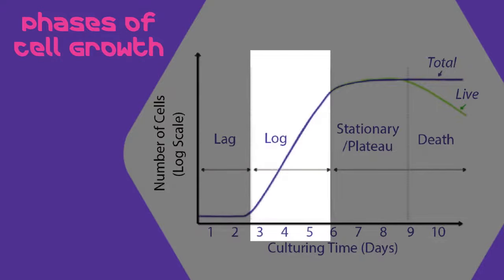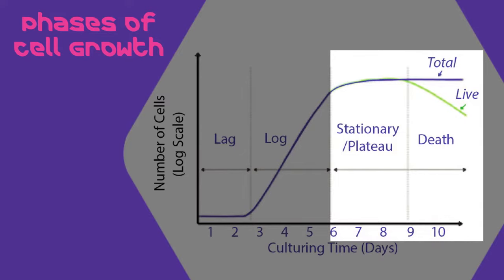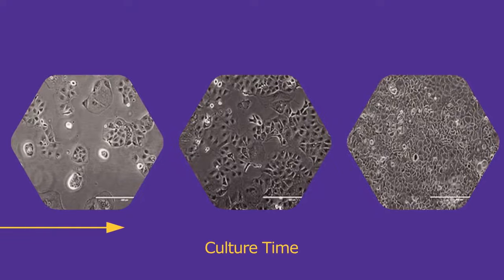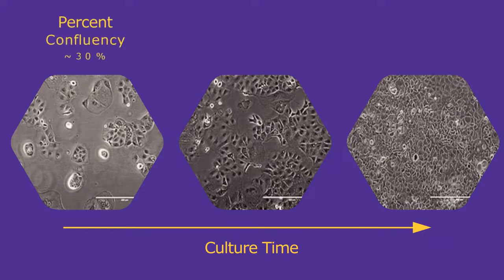Cells will then enter the logarithmic growth phase as they start to actively proliferate. Later phases are characterized by stationary growth and eventual population decline due to cell death. As shown by the images, you can see that as cells grow they will run out of space to grow, which will cause cells to slow down or stop their growth and alter their biology. Under the microscope, we can easily check the overall percentage of flask surface covered by the cells, commonly referred to as confluency.